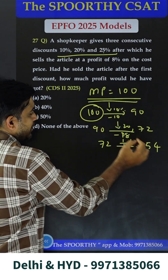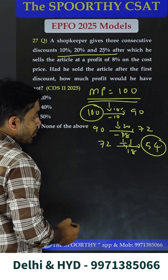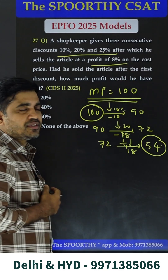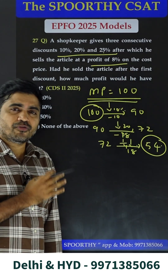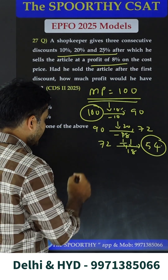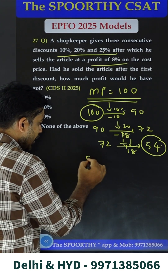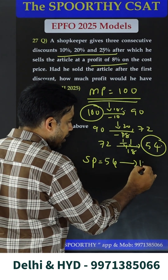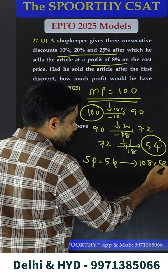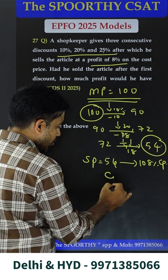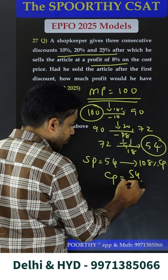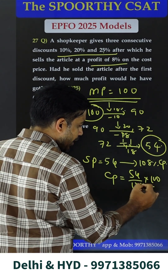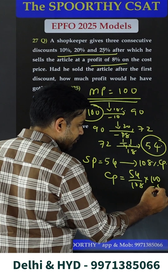Market price is 100 and selling price is 54, and he is still making 8% profit. So first find out what is the cost price. Selling price is equal to 54, which is 108% of CP. From this, CP equals 54 divided by 108 multiplied by 100, which gives 50.